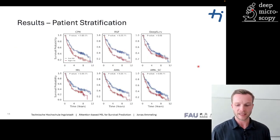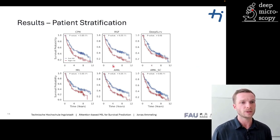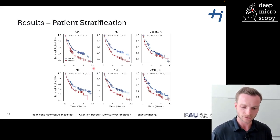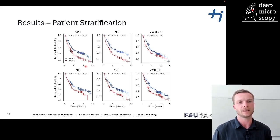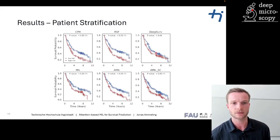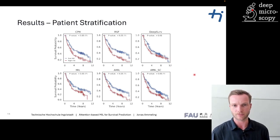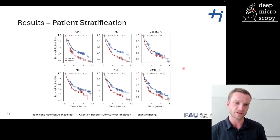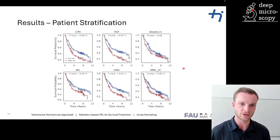Here are the results for the patient stratification, where we can see that all methods were able to perform successful patient stratification, indicated by statistically significant log-rank test results — except for the DeepSurv method, which was not able to achieve statistically different patient stratification. However, this was also the method that performed worst in terms of C-index.